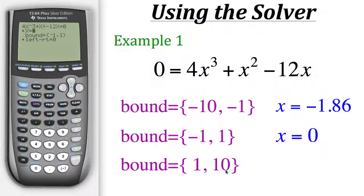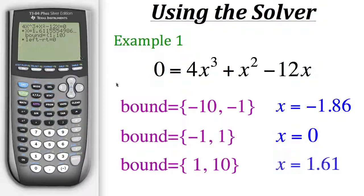Now let's go on to find our third solution, which is in the bounds of 1 and 10. We'll change our lower limit to 1 and our upper limit to 10, then guess a number within that interval — let's say five. Now let's solve it: alpha, enter. That gives us our third solution, which is x equals roughly 1.61. And that's how you use the solver feature on a calculator.